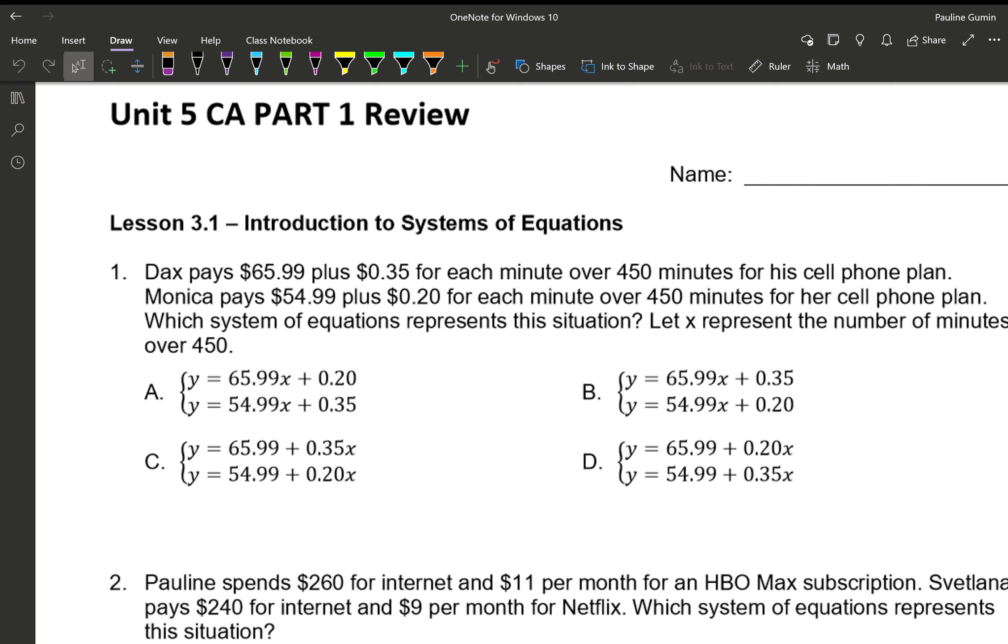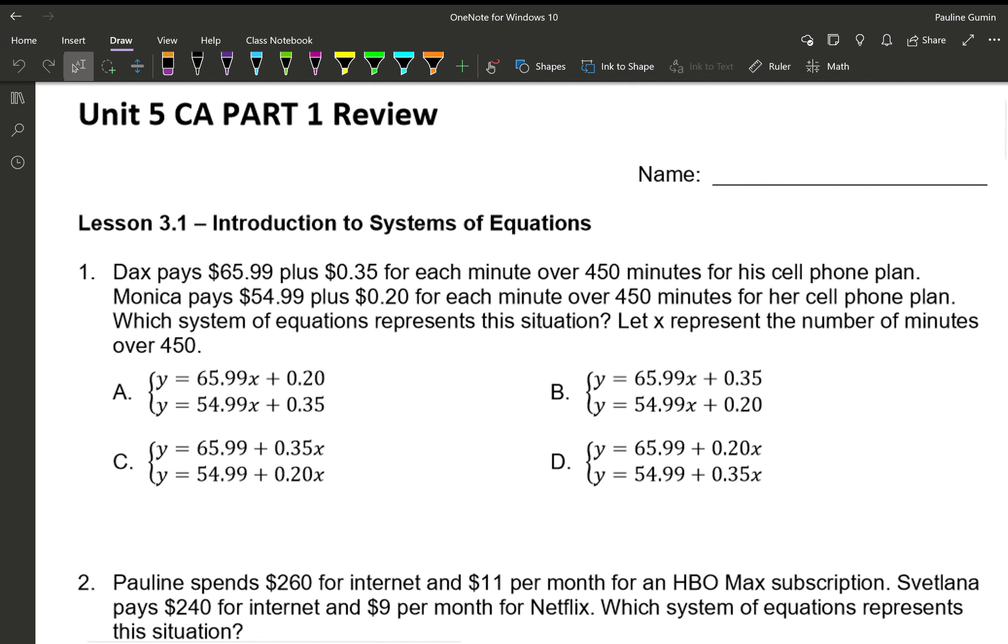Let's have X represent the number of minutes over $450. Now, in multiple choice questions, what I do is I look for the right answer for the first part. So what I'm going to find here is where is Dax's equation correct? So the first thing I have here is $65.99. I'm going to highlight everything that has $65.99. Now, does that $65.99 change at all for every minute? No. $65.99 is just $65.99. There should be no letters next to it. So that helps us eliminate letter A and B, because both of them have X's next to it.